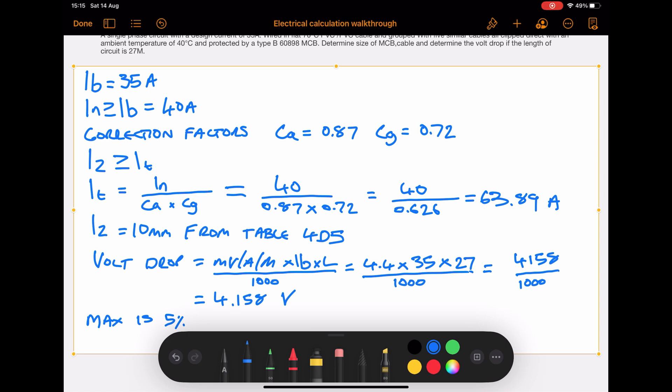Now we need to justify the answer we've given. We write down what the maximum volt drop is for a power circuit which is 5%, and 5% of 230 volts is 11.5. So in that case a volt drop of 4.158 volts is acceptable.